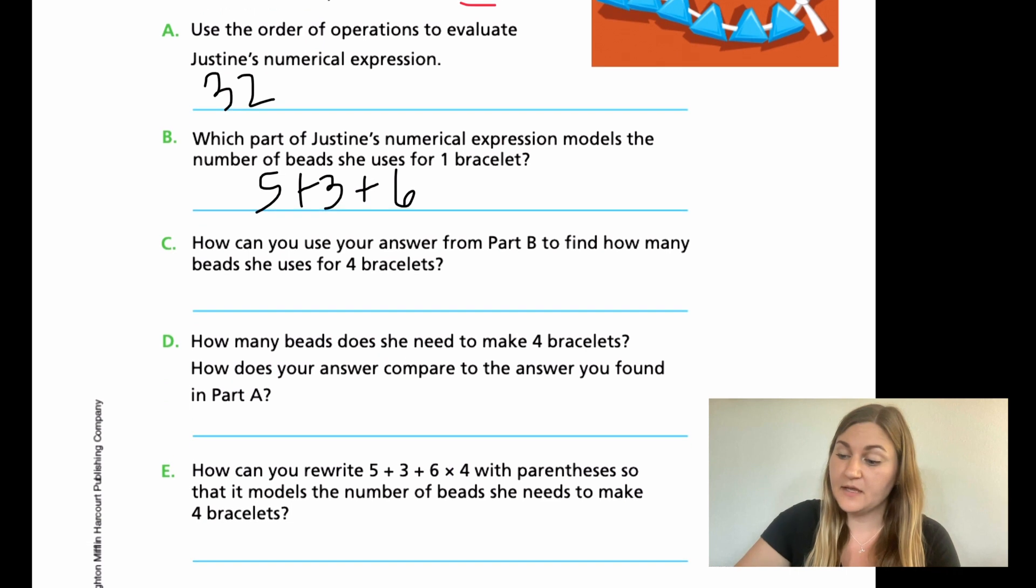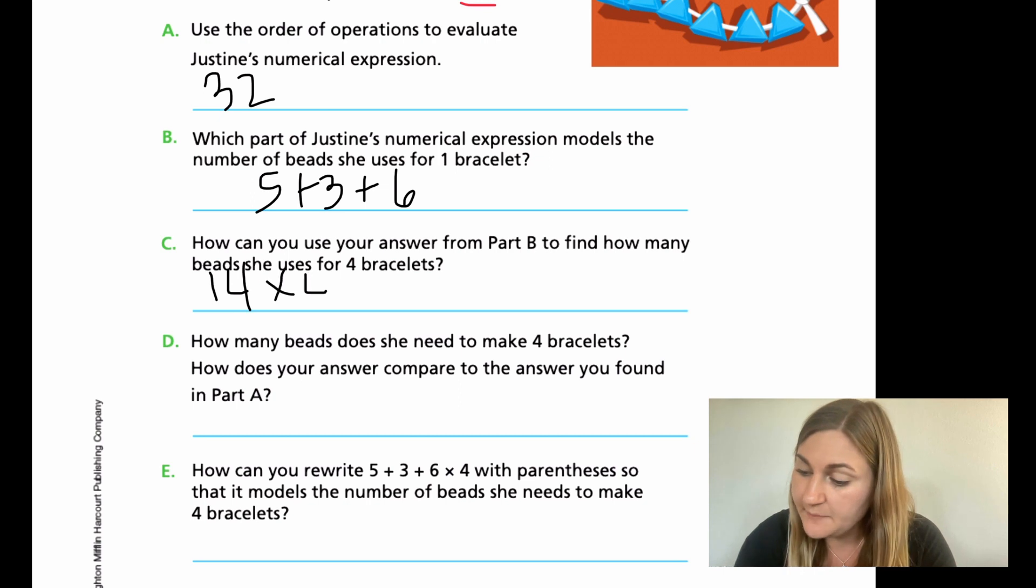Moving down to C. How can you use your answer from part B to find how many beads she uses for four bracelets? Well, from B, if we added all three of those together, we wanted to then multiply that number times 4 to find the total amount of beads. So if we added them together, 5 plus 3 is 8, and 8 plus 6 is 14. So if we took 14 and then multiplied it by 4, we would figure out how many beads she needs.